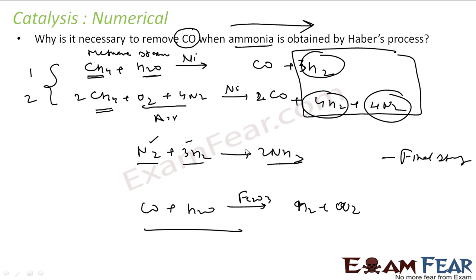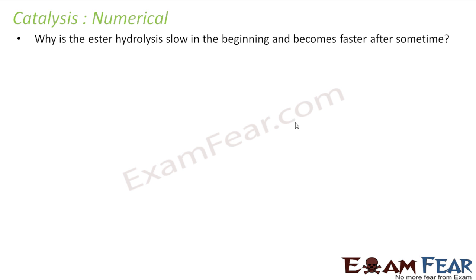Thus, it is necessary to remove carbon monoxide in the Haber process. The next question is: why is ester hydrolysis slow in the beginning and becomes faster after some time? This is an example of autocatalysis.